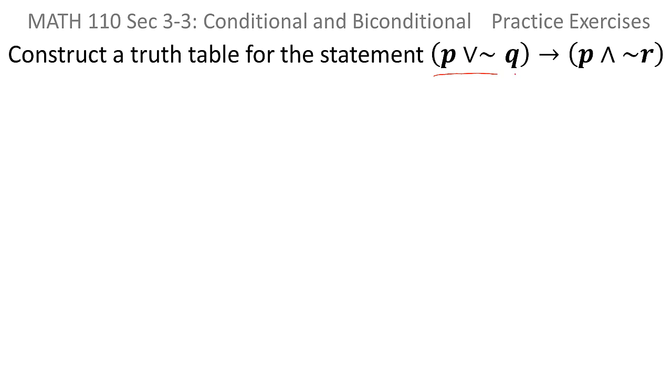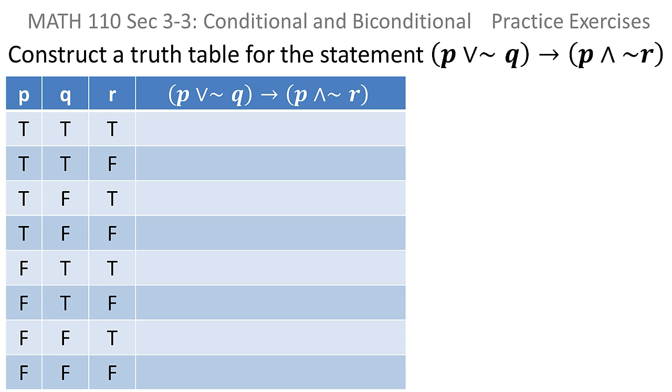Construct a truth table for the given statement. The first thing you'll notice is that because there's a P, a Q, and an R in this logical statement, there will be 2 to the third, which is 2 times 2 times 2, there will be 8 rows.